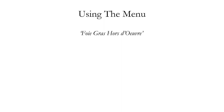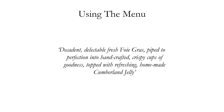As an example, consider a foie gras hors d'oeuvre on our menu. You may see menus written like this — and I've seen some of this terminology used just within the last week or two at restaurants. Here's an example description: 'A decadent, delectable, fresh foie gras piped to perfection into handcrafted crispy cups of goodness, topped with refreshing homemade Cumberland jelly.' You see this sort of language used on menus with the feeling that the more descriptors you use, the more likely you are to sell that item.